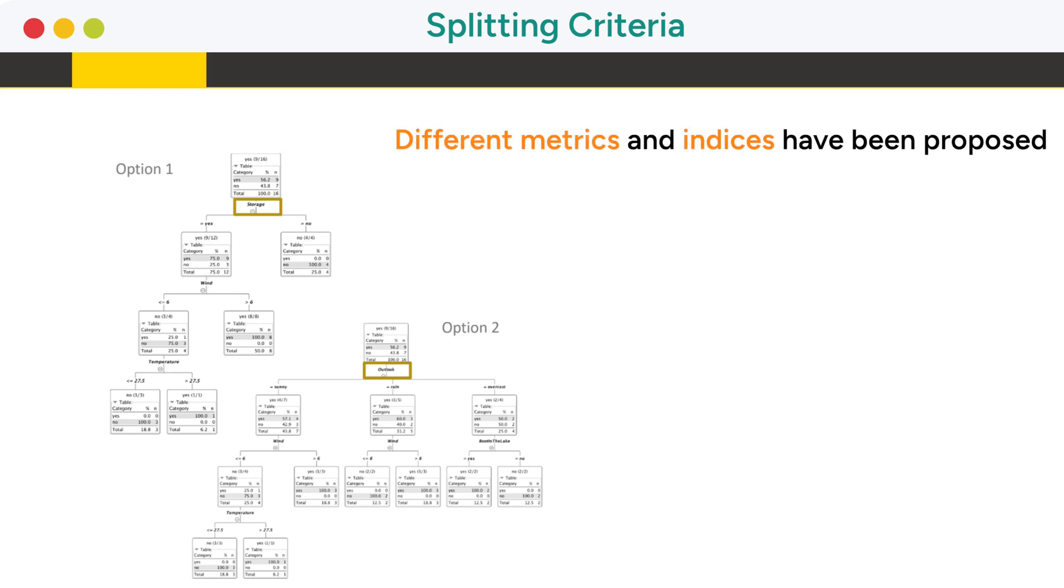Different metrics and indices have been proposed and two of them are implemented in the decision tree learner node: the Gini index and the gain ratio.